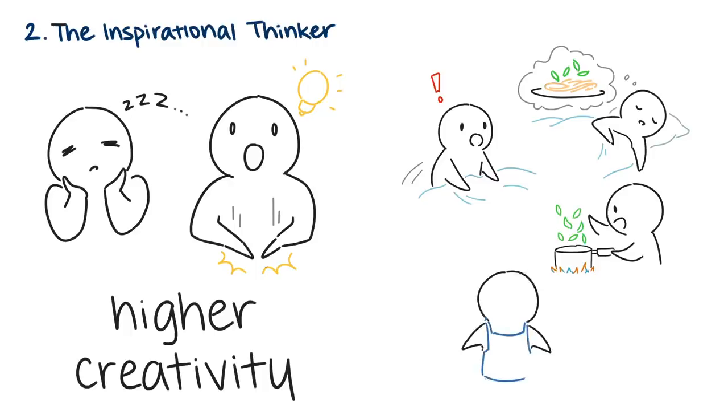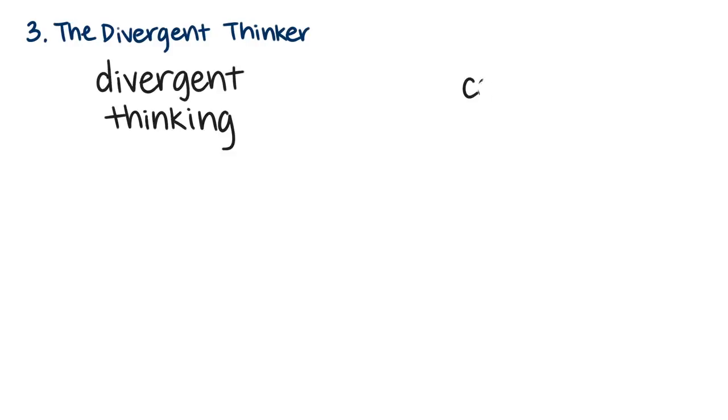Three: the divergent thinker. American psychologist J.P. Guilford coined the terms divergent thinking and convergent thinking. Guilford proposed that these two types of thinking are the opposite of one another.